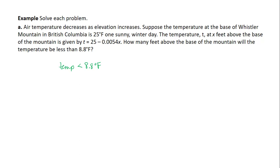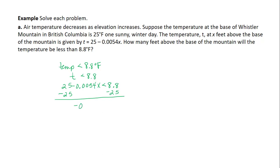We want to know when the temperature is less than 8.8 degrees Fahrenheit. We need to solve the inequality T is less than 8.8, or 25 minus 0.0054x is less than 8.8. To solve the inequality, subtract 25 from each side. This gives us negative 0.0054x is less than negative 16.2.